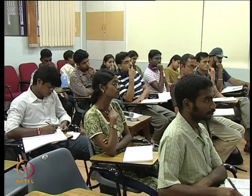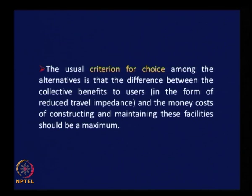Look into the impacts of each alternative carefully and try to choose the optimal one. On what basis? The choice should be based on economic criteria. The usual criterion is that the difference between the collective benefits to users in the form of reduced travel impedance and the money cost of constructing and maintaining these facilities should be maximum. Get the difference for each alternative and choose the one giving maximum benefit minus cost — that is the basis for choosing the optimal alternative for implementation.